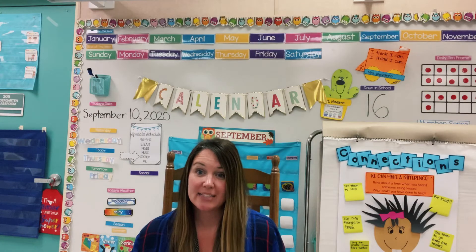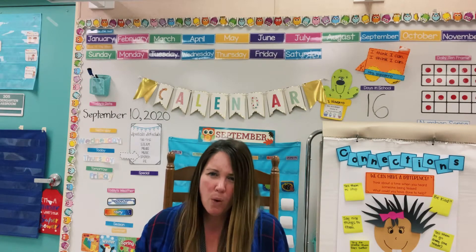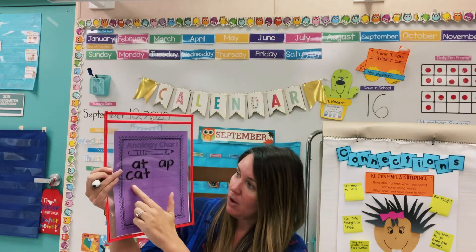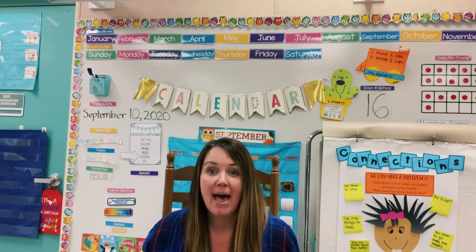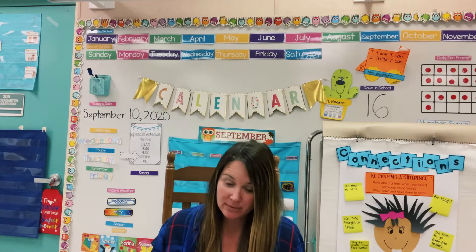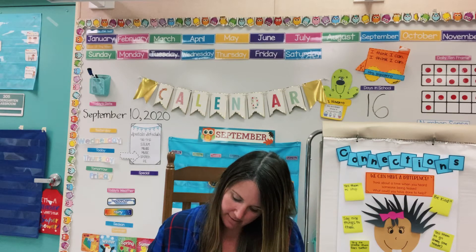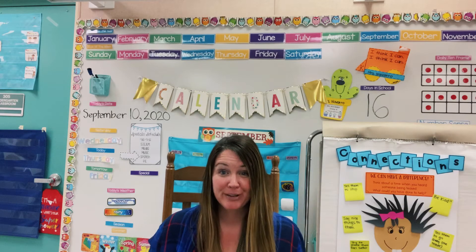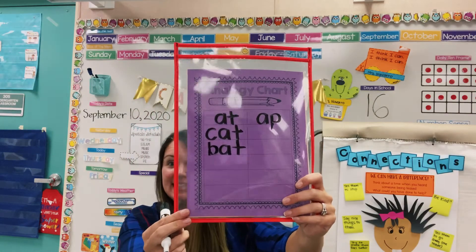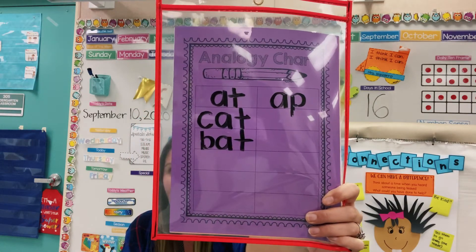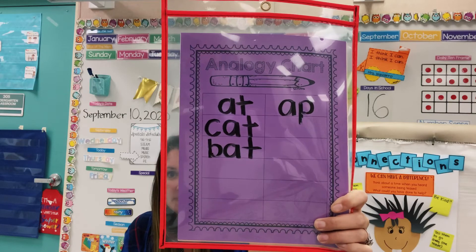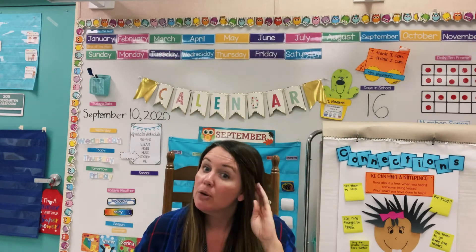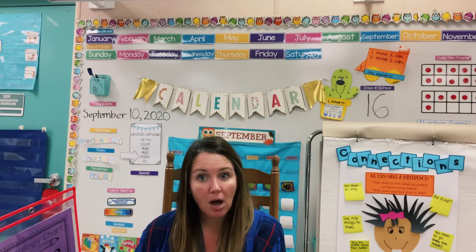My next word is going to be 'bat.' What side would bat go on? Is it in the 'at' or the 'ap'? B-a-t. See if you can write it down. It's in the 'at' family. B-a-t. Bat. Check yours. If this seems really hard for you, you want to practice your 'at' words some more. You can pause and give yourself a little more time if I'm going too fast.